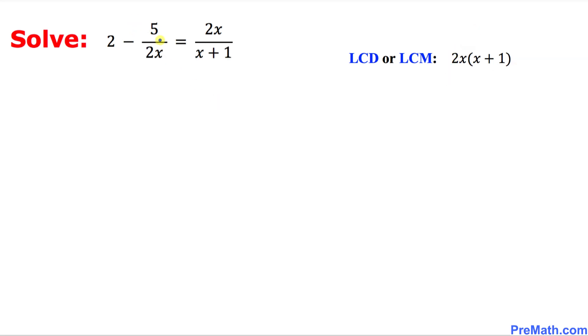Now we are going to multiply this least common denominator, 2x times x plus 1, with each and every term across the board. I'm going to multiply 2x times x plus 1 with this first number, likewise with this fraction, and finally on the right hand side, 2x times x plus 1.